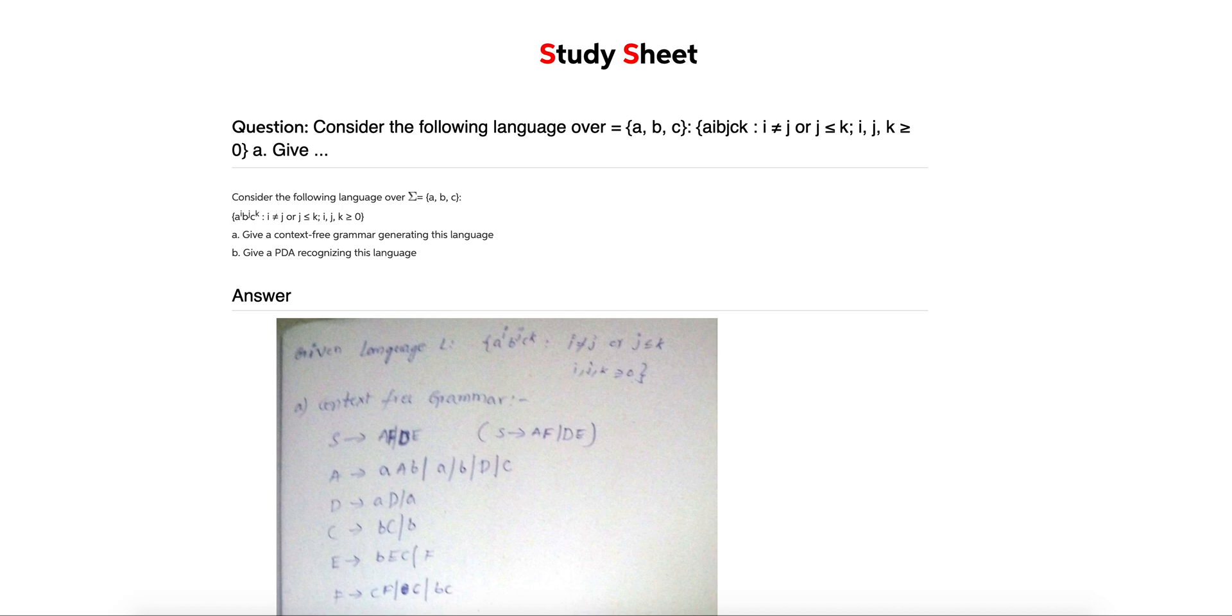Consider the following language over a, b, c: a^i b^j c^k, where i is not equal to j, or j is less than or equal to k.